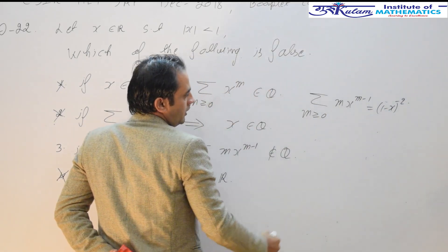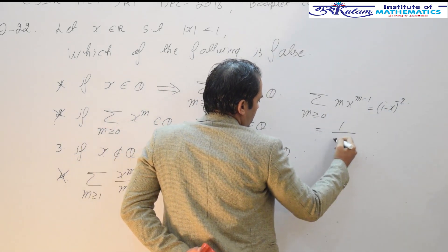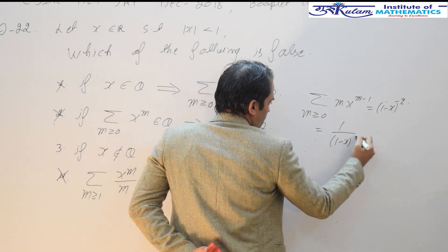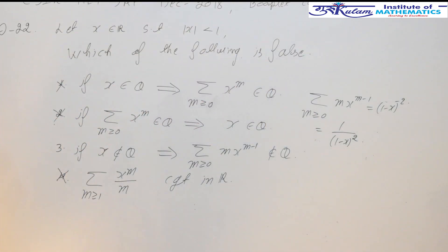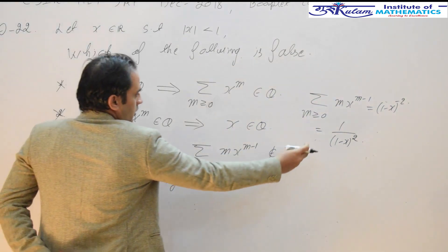This is basically 1 minus x to the power minus 2, the expansion of this function, that is 1 upon 1 minus x whole square. You can easily check this.